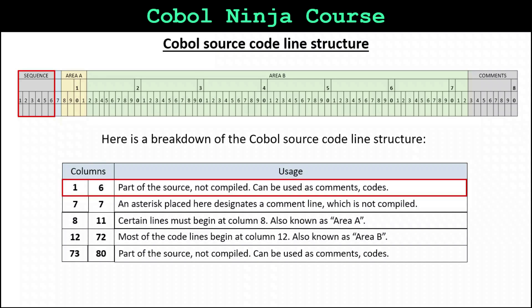Columns 1 through 6 are known as the sequence columns. They are part of the source, but not compiled — they are not part of the program. Column 7 is known as an indicator column. Its main use is when you place an asterisk in column 7, which designates the line as a commented line that is not compiled.